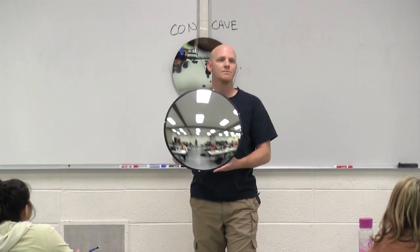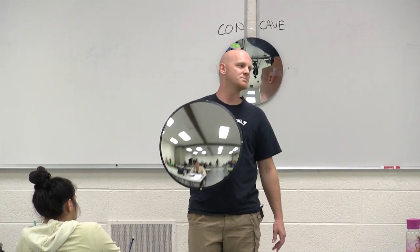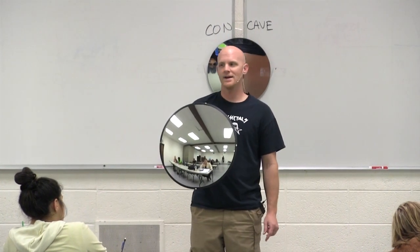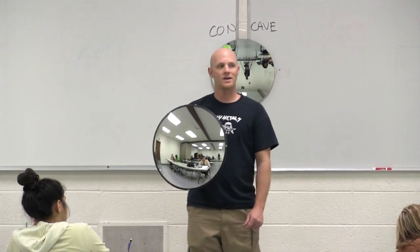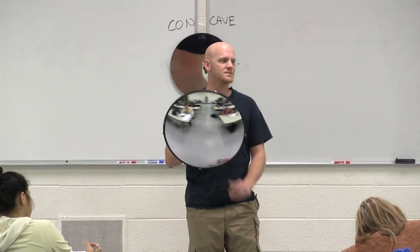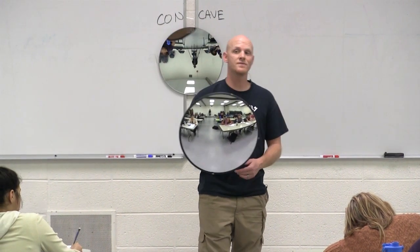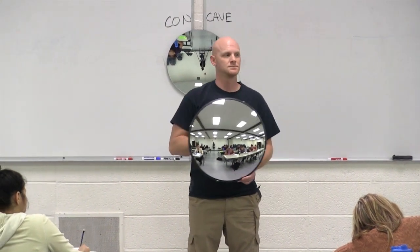You'll find with a convex mirror, it does not matter how close or far from this thing the object is placed. You always get an upright image. And we'll find out later that upright always goes with virtual. So for a convex mirror, you always get an upright virtual image. And things always appear smaller than they really are.